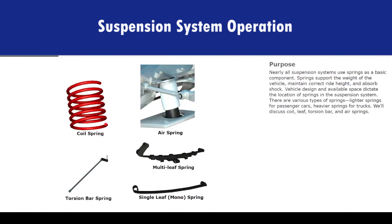Nearly all suspension systems use springs as a basic component. Springs support the weight of the vehicle, maintain correct ride height, and absorb shock. Vehicle design and available space dictate the location of springs in the suspension system. There are various types of springs: lighter springs for passenger cars, heavier springs for trucks. We'll discuss coil, leaf, torsion bar, and air springs.